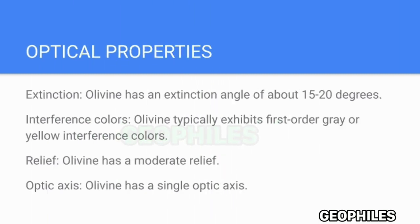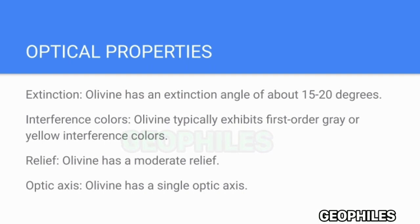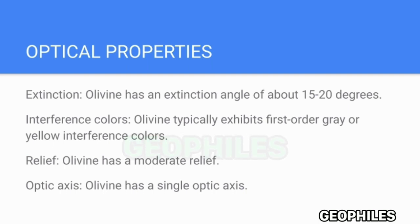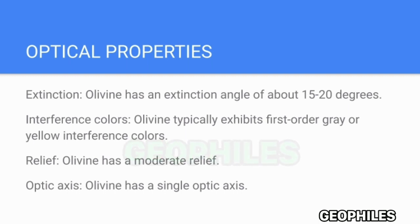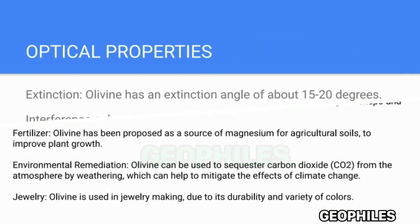Extinction: Olivine has an extinction angle of about 15 to 20 degrees. Interference Colors: Olivine typically exhibits first-order grey or yellow interference colors. Relief: Olivine has a moderate relief. Optic Axis: Olivine has a single optic axis.